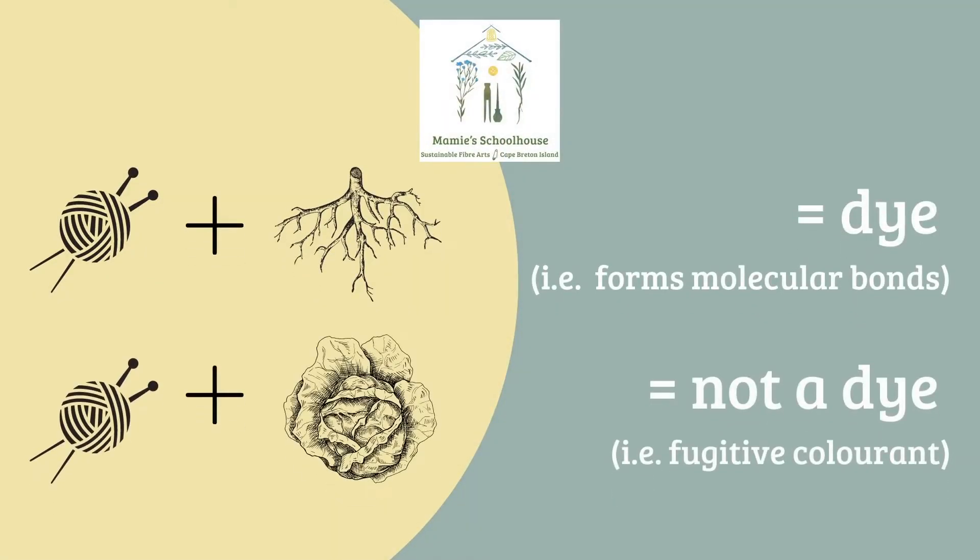So if the colored substance can form molecular bonds with the fibers, it's a dye. If it can't form those kinds of bonds, it's what we call a temporary or fugitive colorant.